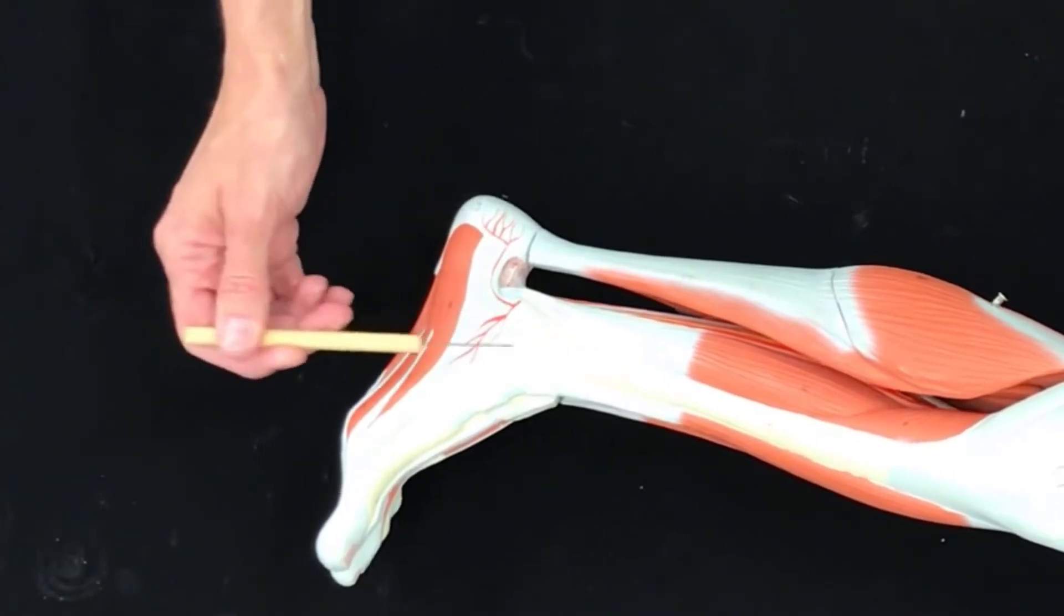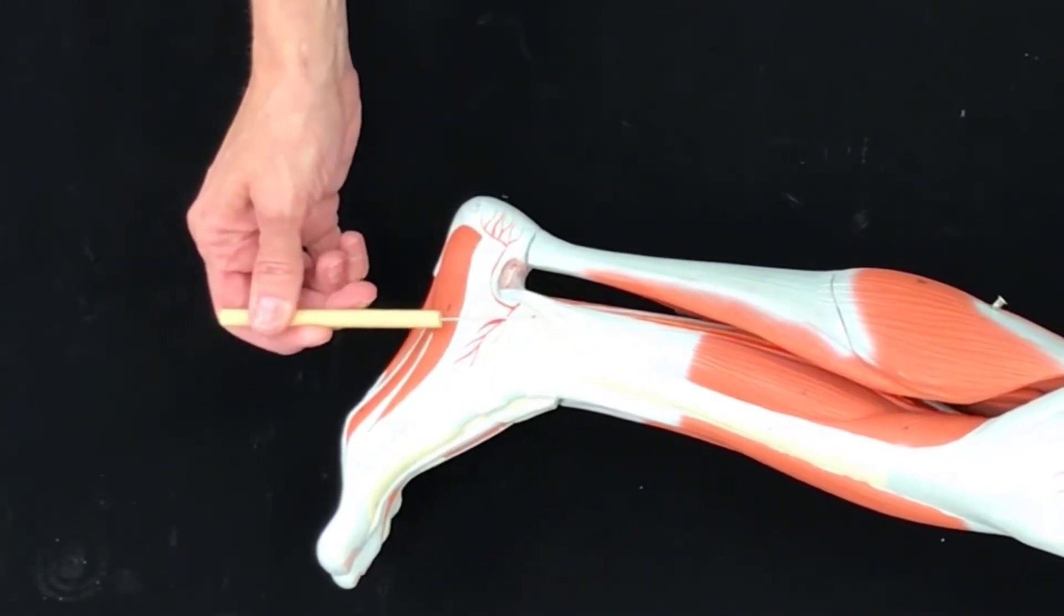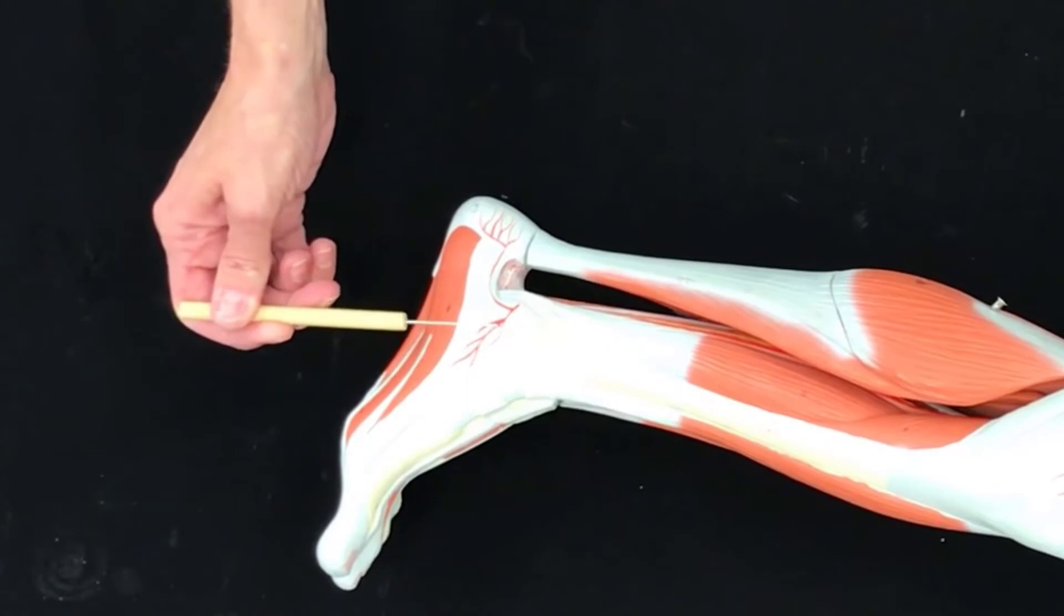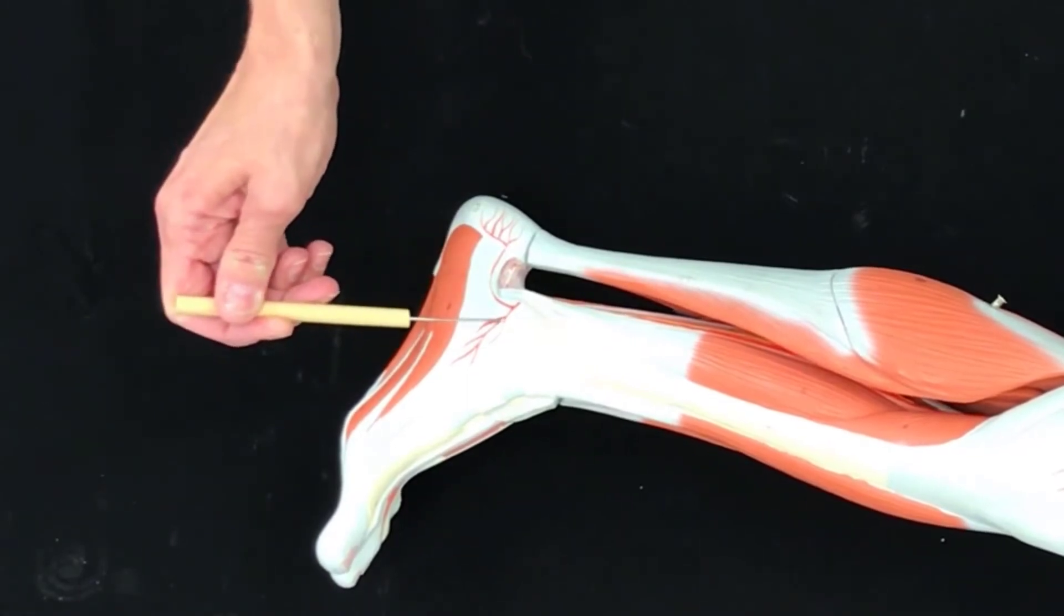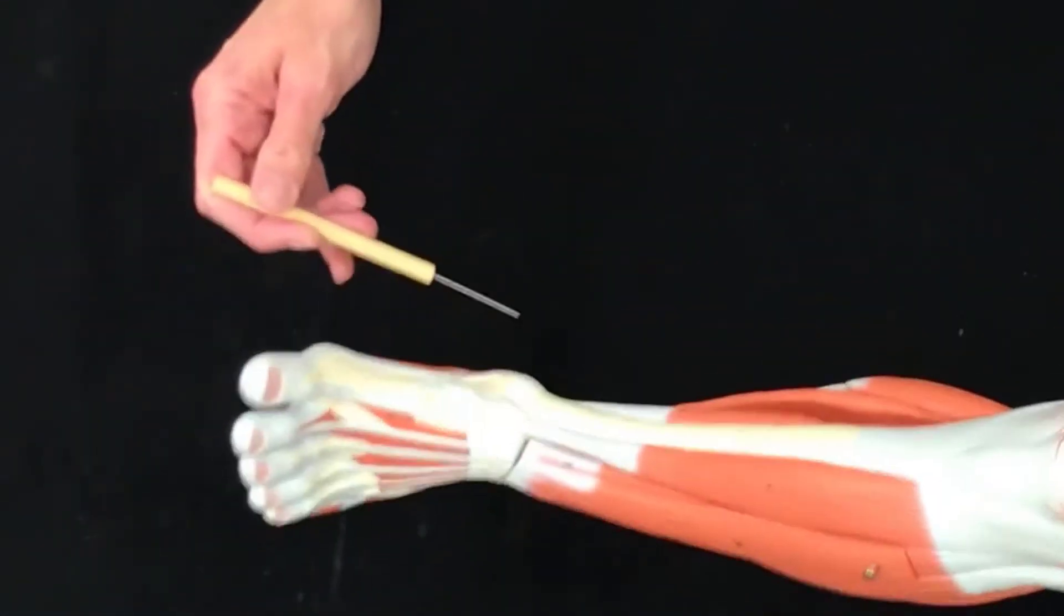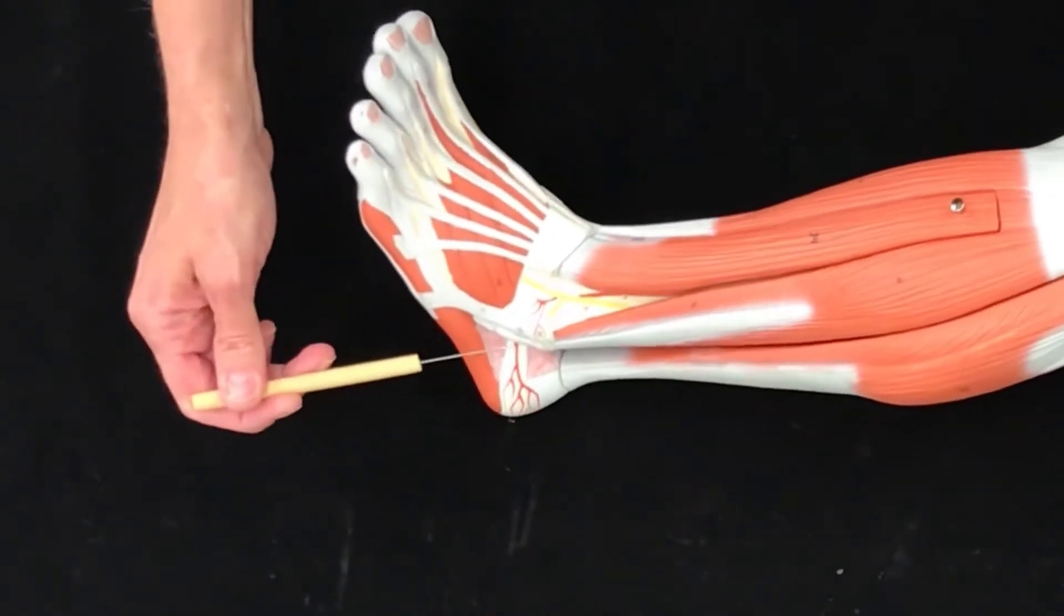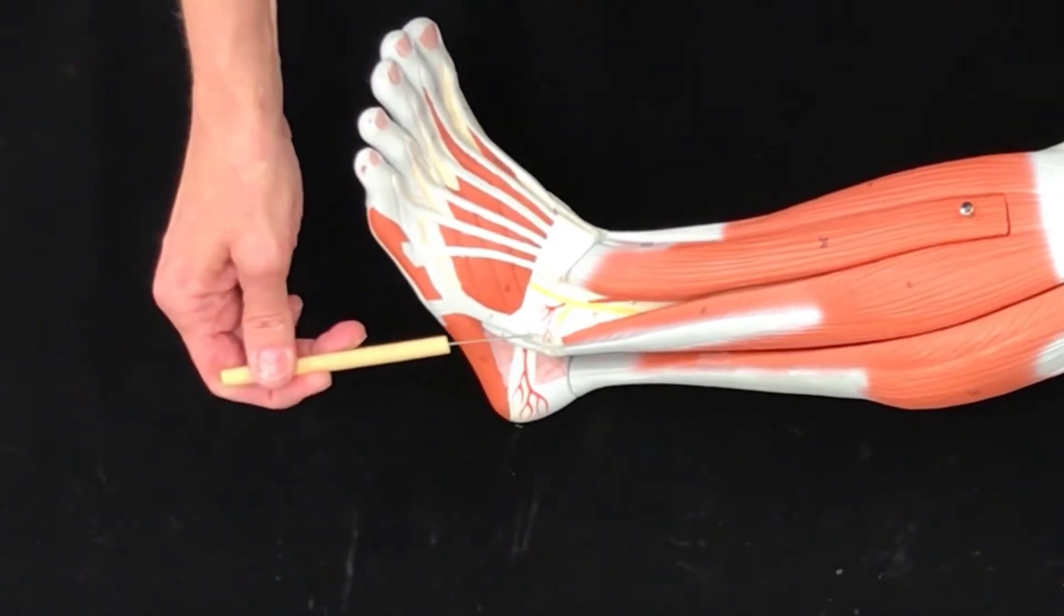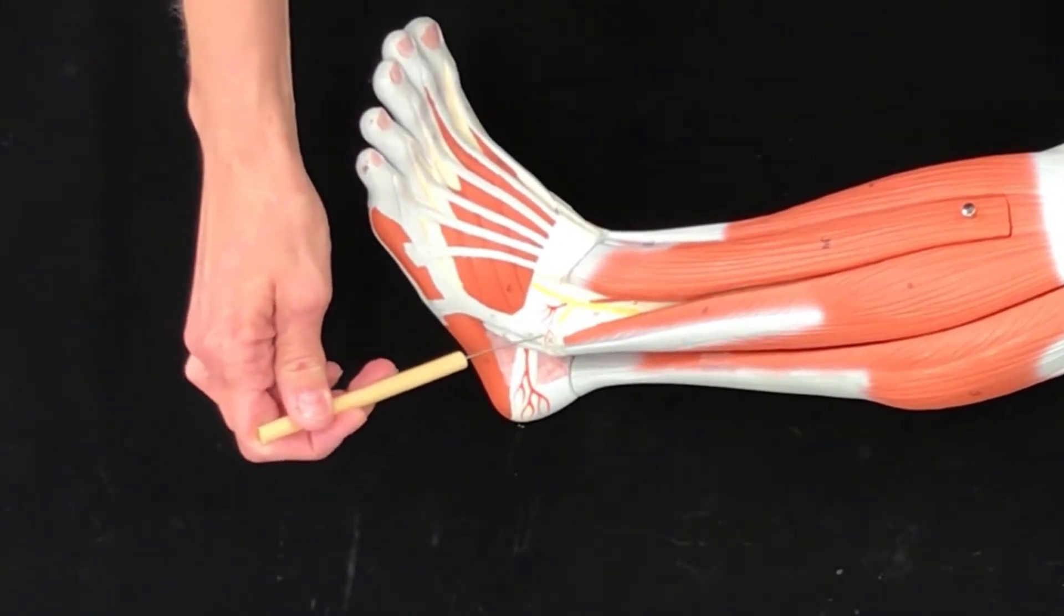So this is the inside of your ankle and that is called the medial malleolus. And then we have the outside of your ankle and this one is the lateral malleolus.